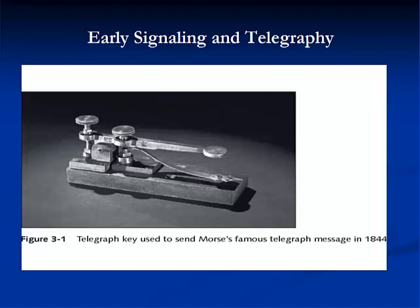Now let's go back to 1837, when Samuel Morse invented the telegraph, which consisted of an electromagnet and a hand-operated switch, known as a key, that alternately opened and closed an electrical circuit over a wire. What he transmitted was a series of short and long pulses, or dots and dashes, that represented characters. This became known as Morse code.